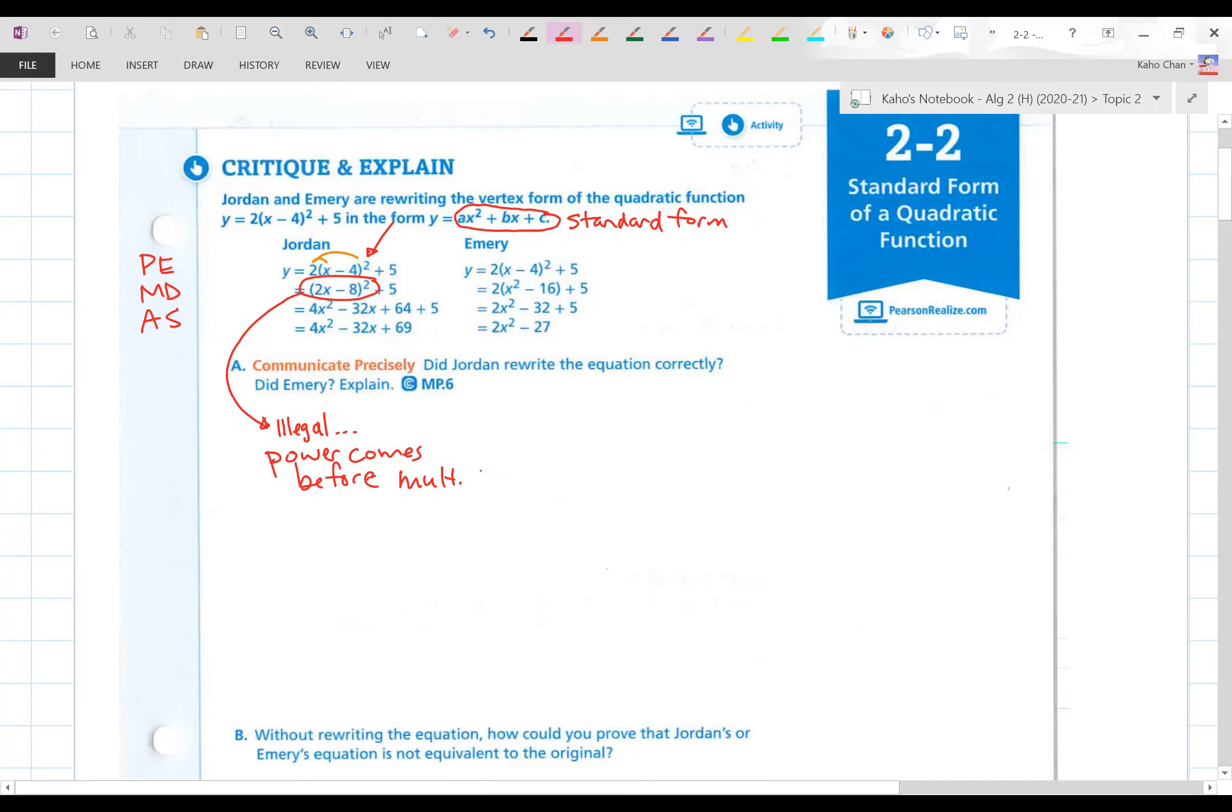Did Emery do the right thing? Let's take a look here. x minus 4 squared becomes x squared minus 16. Well, she did something illegal too, right there. It should be expanded and foiled or apply the distributive property. So they both made mistakes.